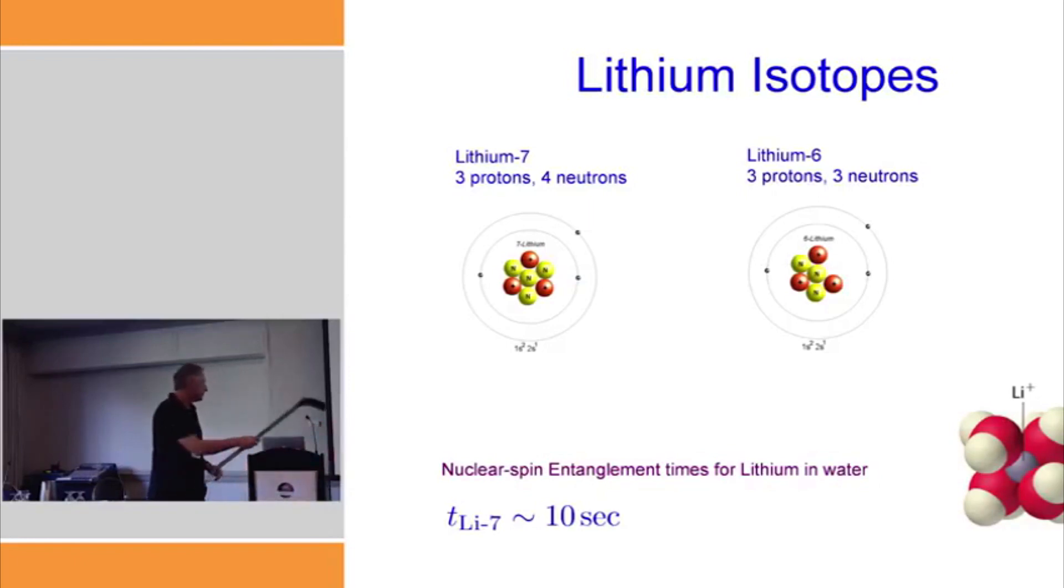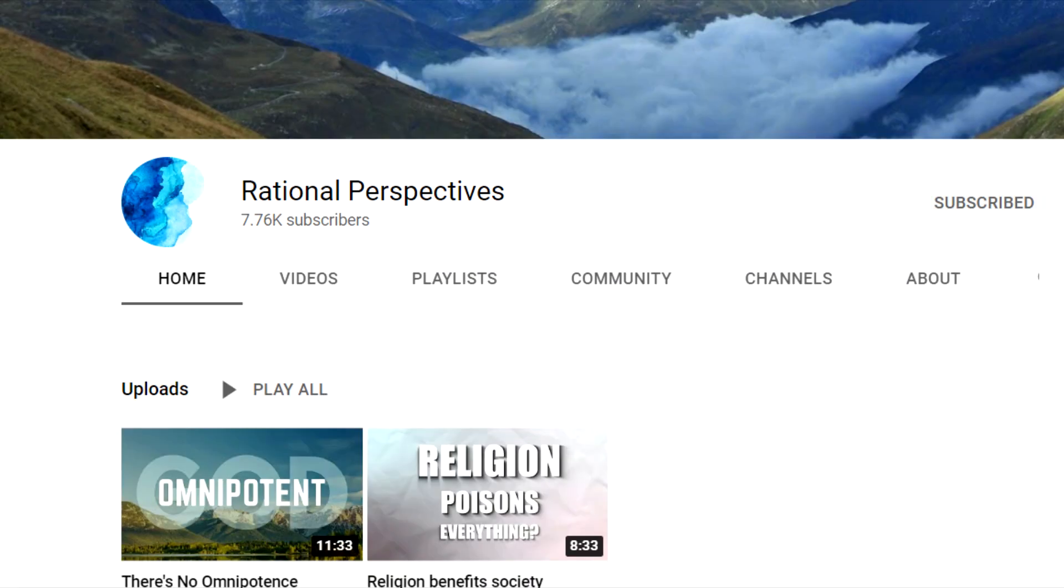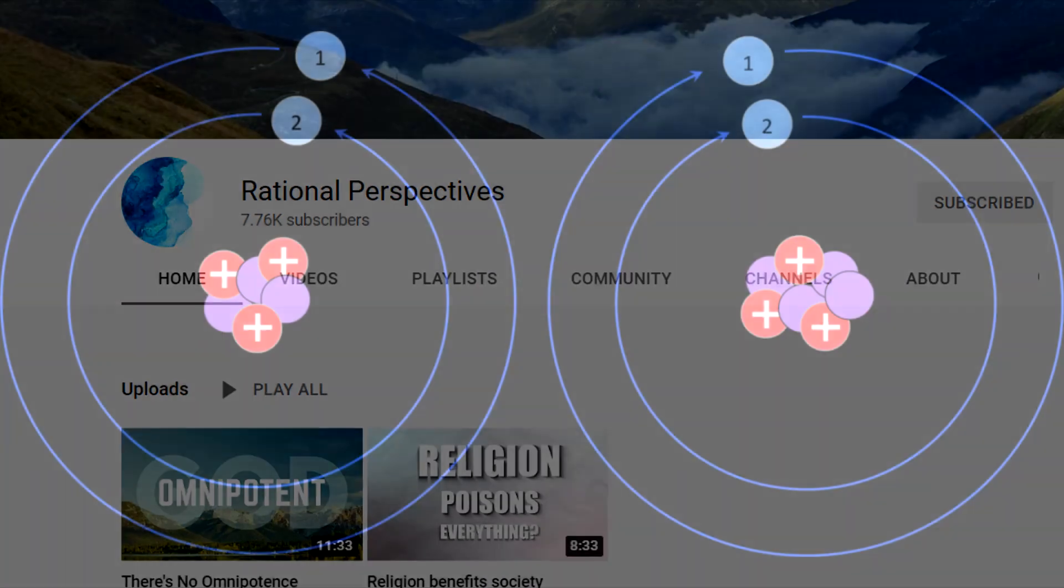Now, a certain objection arose to the lithium isotope experiments that was first brought to my attention by DeRoz83, now known as Rational Perspectives on YouTube. What he noted was that lithium-7 is heavier than lithium-6 and thus the difference may be due to it distributing in the bloodstream more slowly due to its mass, thereby also affecting the rats' brains more slowly.